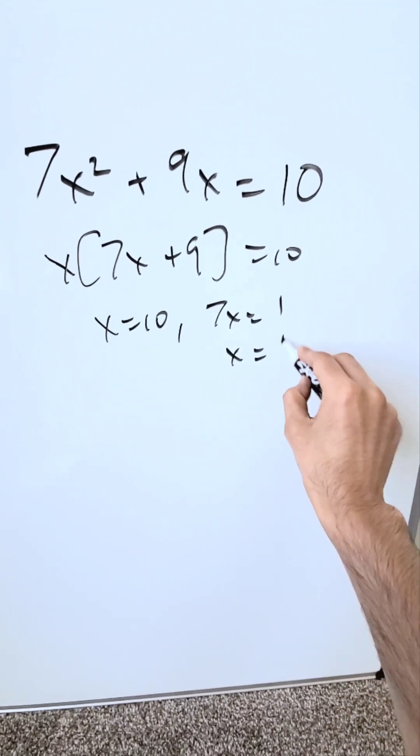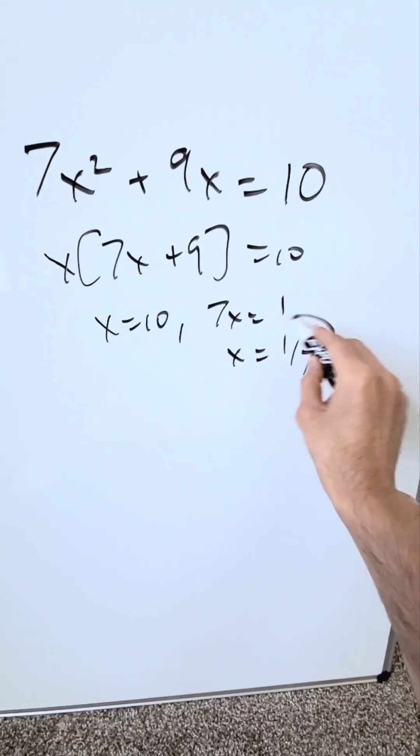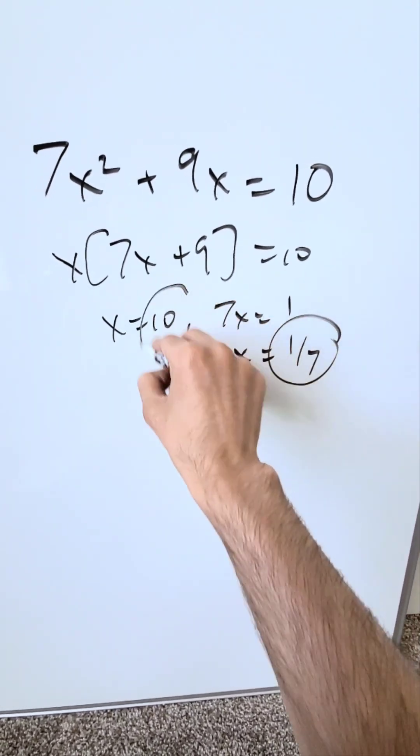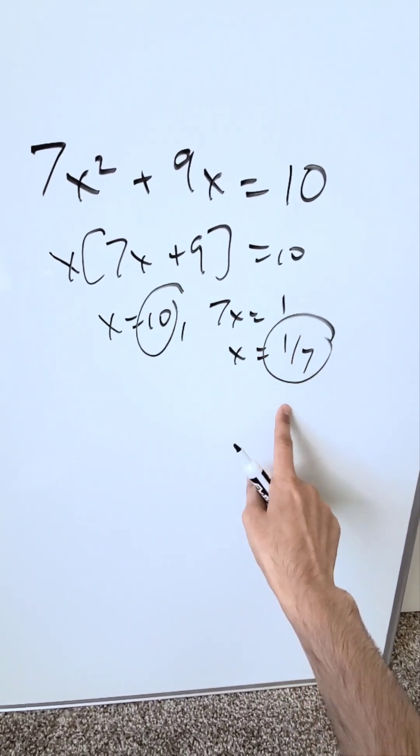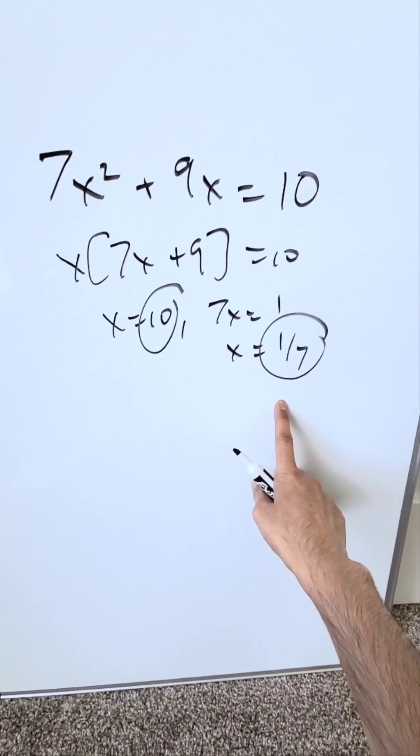From the other part, 7x plus 9 equals 10, so 7x equals 1, giving x equals 1 over 7. So we'd get two solutions: x equals 10 and x equals 1 over 7 — but both are incorrect.